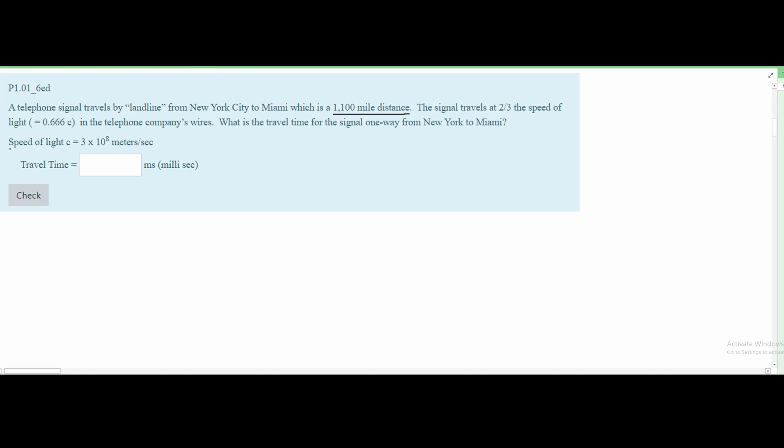The speed of light is given to us. It is c equals 3 × 10^8 meters per second, and we are going to take two-thirds of that speed. We are asked, what is the travel time for the signal one way from New York to Miami? So we need to find time, which we can write as T, and then we can start solving this problem by plugging things in.